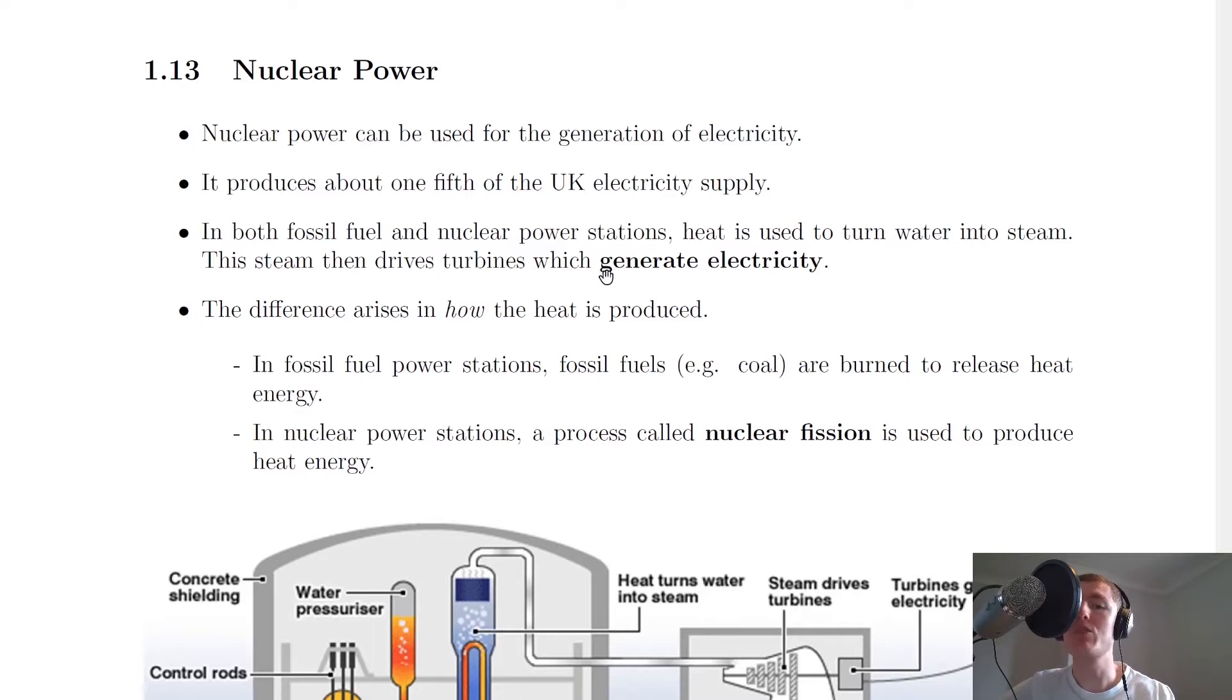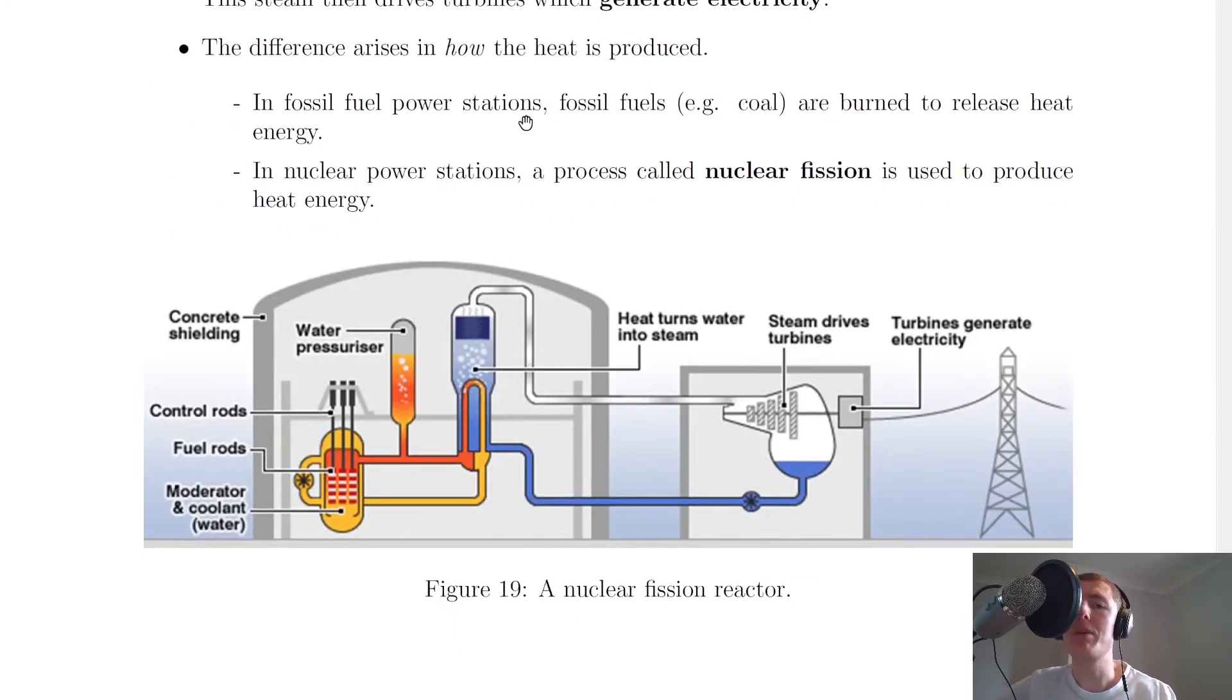This steam then drives turbines which generate electricity. So this is the simple process of how we create electricity. The difference between fossil fuel powered stations and nuclear power stations arises in how the heat is produced. In fossil fuel power stations, fossil fuels, for example coal, oil, or gas, are burned to release heat energy.